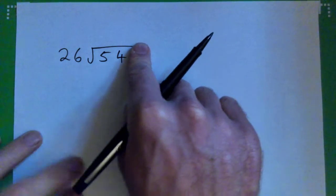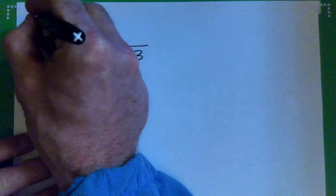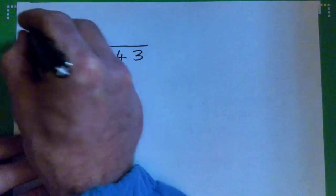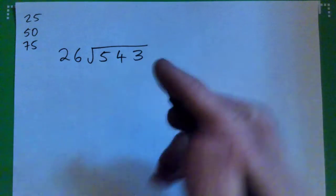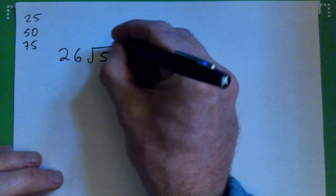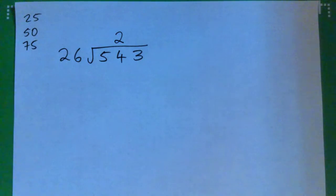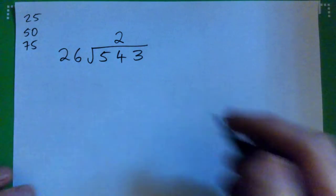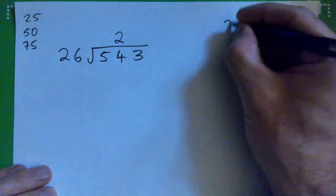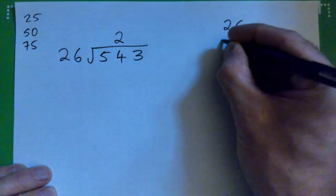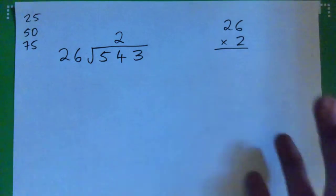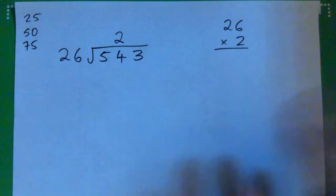26 is close to 25, and I'm thinking 25 goes 25, 50, 75 — I'm going to guess about 2 and see what happens. If we're wrong, we're wrong, it's not a big deal. Some students like to do 26 times 2 on one side of the page, and that's perfectly fine.